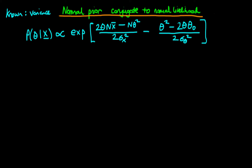In this video, we're going to continue our proof that the normal prior is actually conjugate to a normal likelihood in the circumstance where we know the variance. At the end of the last video, we had this expression for the posterior — the probability of theta given x was proportional to the exponent of this term which you see here.